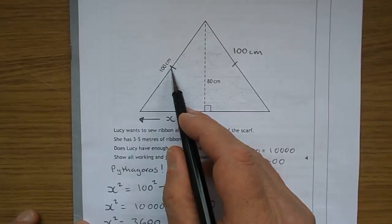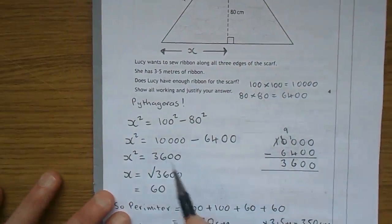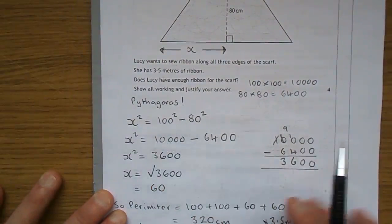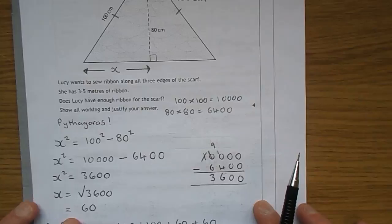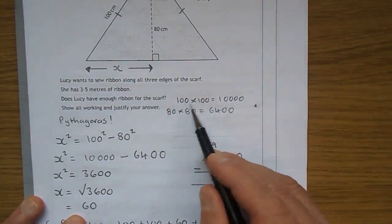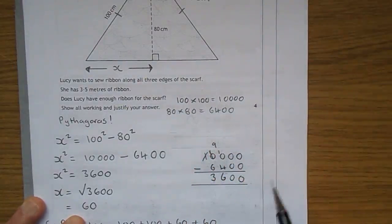So using Pythagoras, X squared is 100 squared take away 80 squared. Now obviously what's 100 times 100? 1 times 1 is 1 and then you've got four zeros there: 10,000.